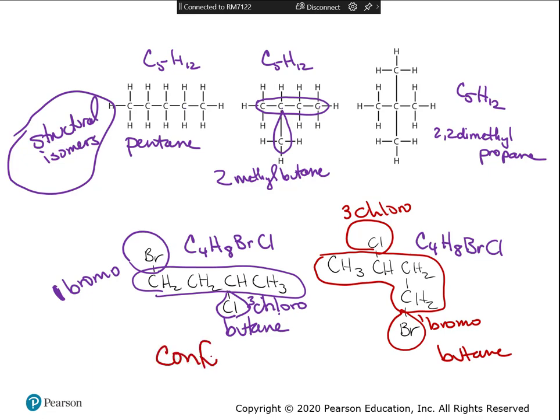So these are conformational isomers. To summarize: if they don't have the same formula, they're not related. If they have the same name and are isomers, they're conformational isomers. If they're put together differently and have different names, they're structural isomers.